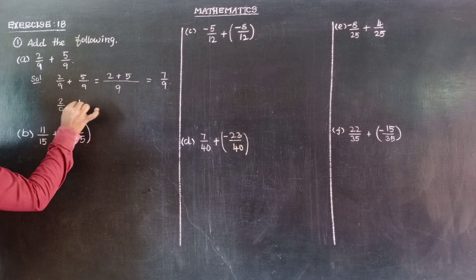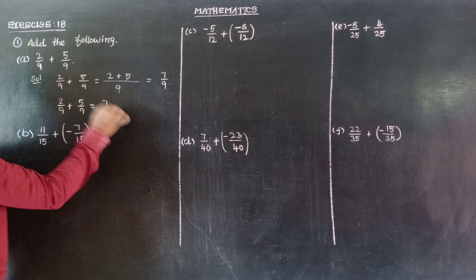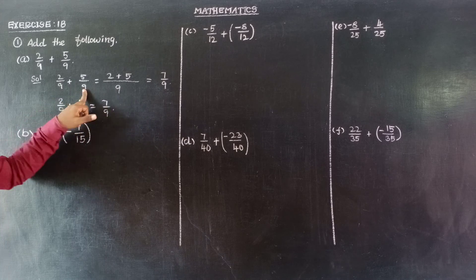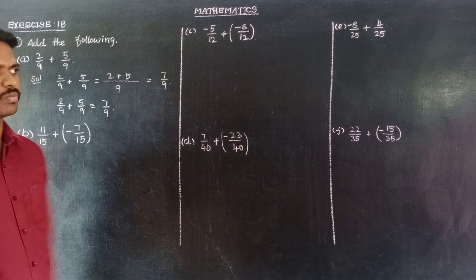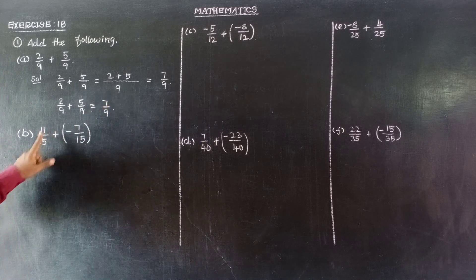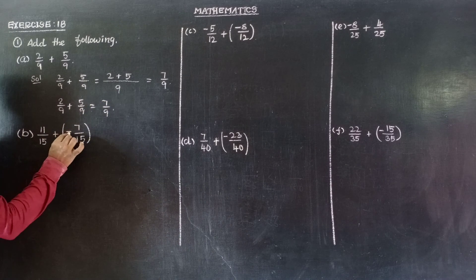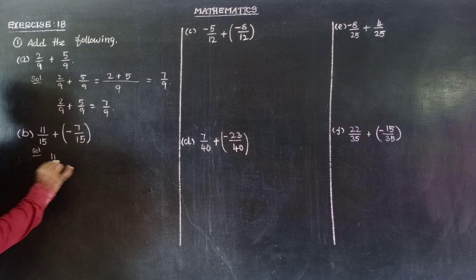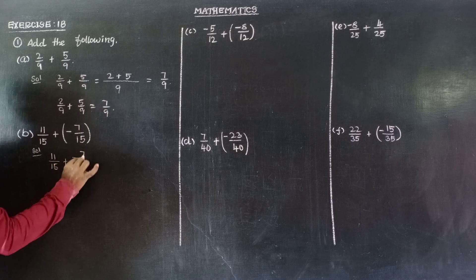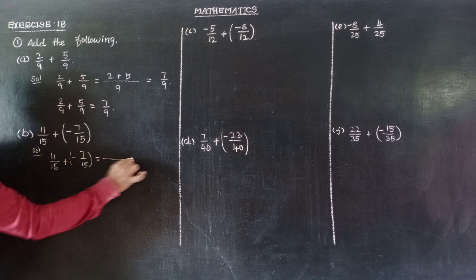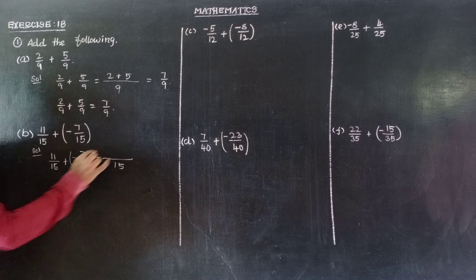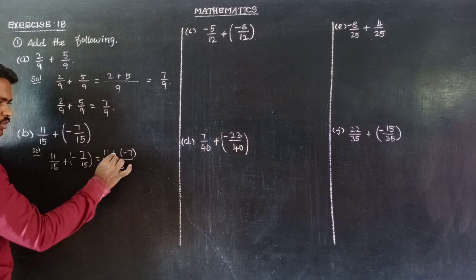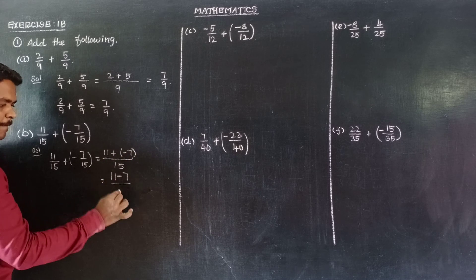So 2 by 9 plus 5 by 9 is equal to 7 by 9. Second one: 11 by 15 plus minus 7 by 15. So plus into minus is minus, so 11 minus 7 by 15.